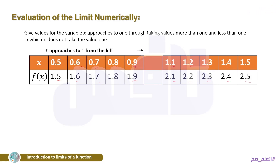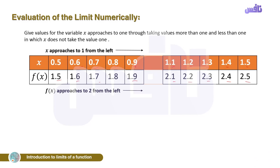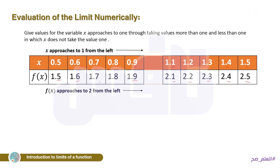When x approaches 1 from the left (from values smaller than 1: 0.5, 0.6, 0.7, 0.8, 0.9), look at the table: f(x) gives 1.5, 1.6, 1.7, 1.8, 1.9. It is getting closer to 2. So when x approaches 1 from the left, f(x) approaches 2 from the left.